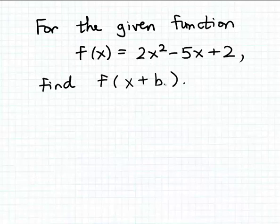Here is our second example of evaluating a function at a symbolic input. We have the same function as we had in the last example, f of x equals 2x squared minus 5x plus 2.